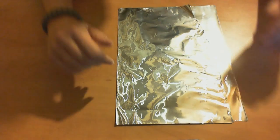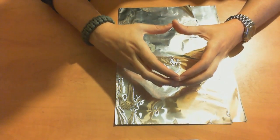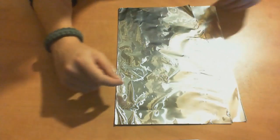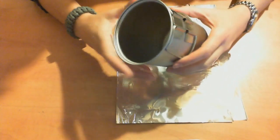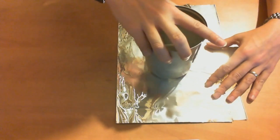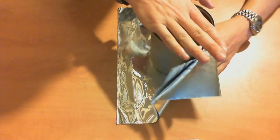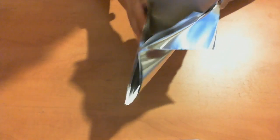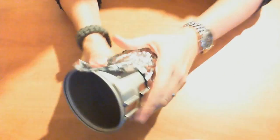Now we need our template. Now ordinarily what we do out in the woods is we would get a nice thick branch and saw it to give us a nice square end, but I don't have one of those handy today so I'm just going to use my Snow Peak pot template. And what we do is we stick our template in the center of our foil and then we just fold it up around the outside. Stretch it in and we need to get it as tight as we can.